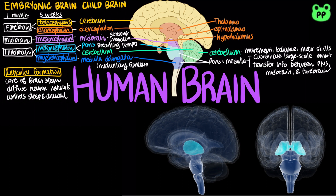The diencephalon includes three regions. The epithalamus includes the pineal gland, which secretes the hormone melatonin that plays a role in sleep cycles. The epithalamus also generates cerebrospinal fluid from blood.